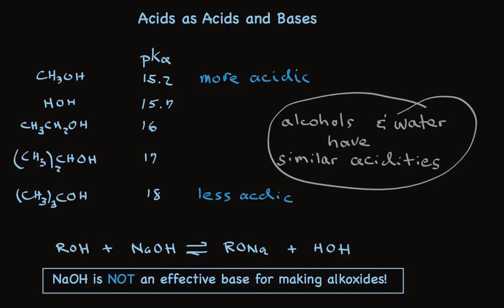which means using sodium hydroxide is a very poor way to make alkoxides. We're going to have to look for a base that's much stronger than NaOH, so we can shift the equilibrium all the way to the right, if we want to prepare sodium alkoxides.